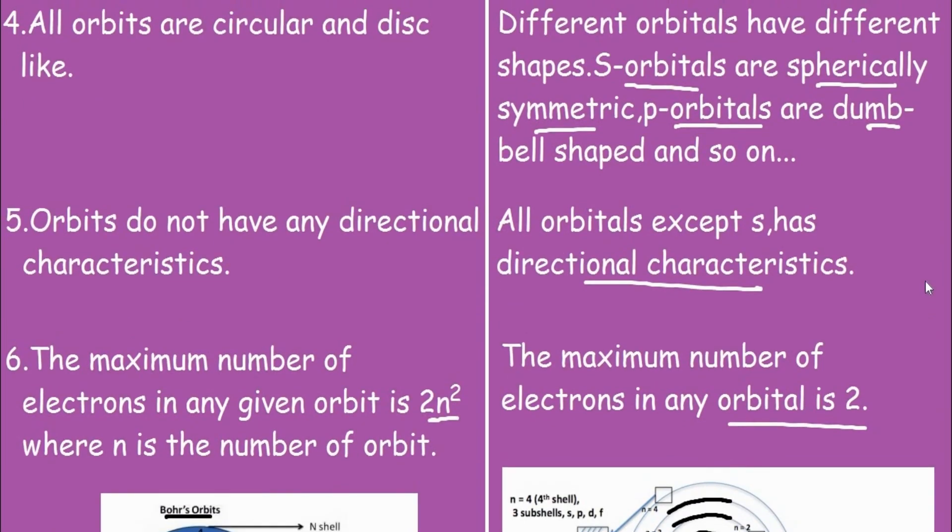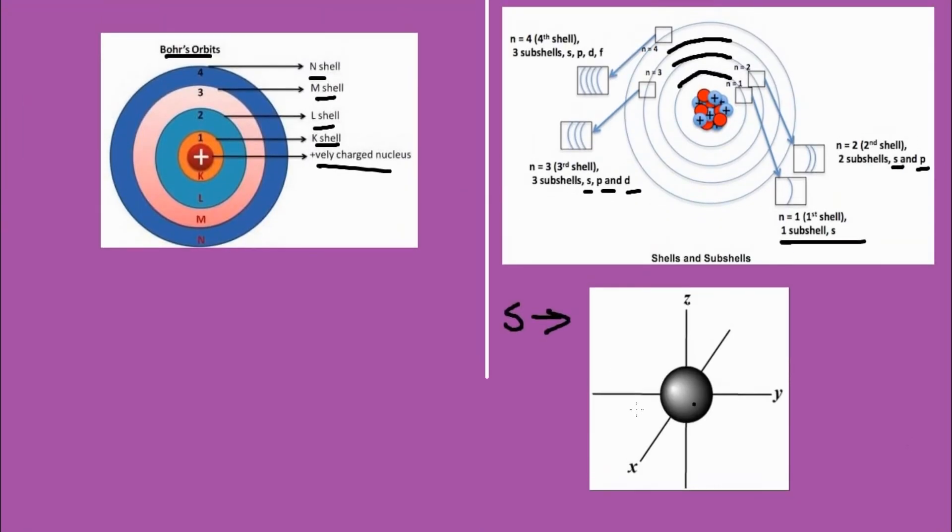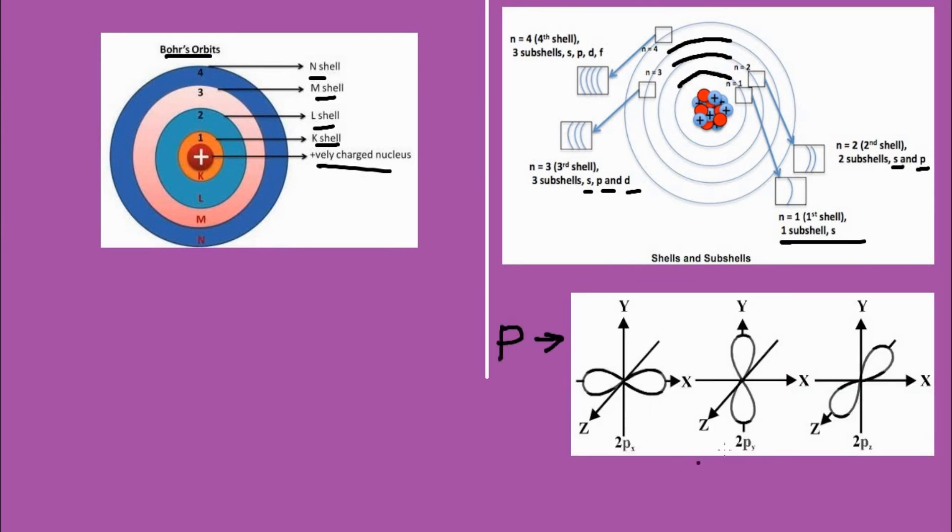S orbitals are spherically symmetric. Now p orbital looks somewhat like this. So p orbitals can be divided into further px, py, and pz, and you can see that it is dumbbell shaped.